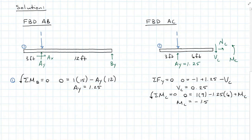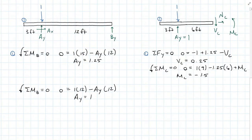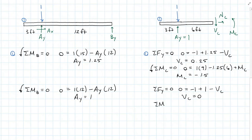When our load is at A, I will still sum my moments about B, but this time our load has moved closer: 1 times 12 minus A_Y times 12, which means A_Y is experiencing 100% of the load — equal to 1. Summing forces in the Y direction, minus 1 plus A_Y now equal to 1, minus shear at C — shear at C is now equal to 0. It is feeling no effects from that load when the load is acting over the pin. Summing moments about C: 1 times 6 minus 1 times 6 plus moment at C — moment at C will also experience 0 influence.